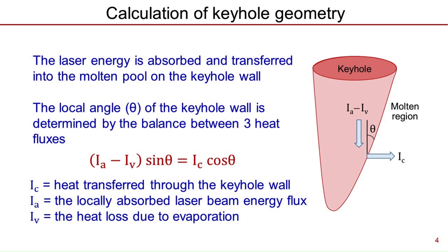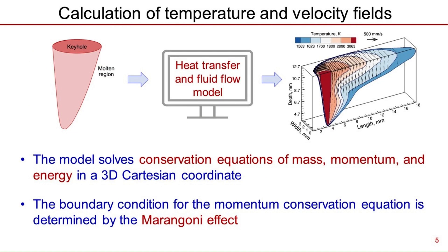For example, the local angle of the keyhole wall was determined by the balance between three heat fluxes: heat through the keyhole wall, the locally absorbed laser energy, and heat loss due to evaporation. The computed keyhole geometry was then used to calculate the temperature and velocity fields in 3D. Following the computation of the keyhole geometry, the resulting profile was transferred to a domain suitable for analyzing heat transfer and fluid flow. The conservation equations of momentum, mass, and energy were solved to calculate the 3D temperature and velocity distributions.